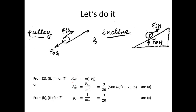From equation 2, the output force at H equals the total theoretical mechanical advantage times the lossless input force. Solving for the lossless input force: 3 over 20 times 500 pounds equals 75 pounds. That answers part A — the force without friction. For part C, the ratio of the barrel's upward displacement to the rope displacement is 1 divided by the total theoretical mechanical advantage, which is 3 over 20. That answers part C.